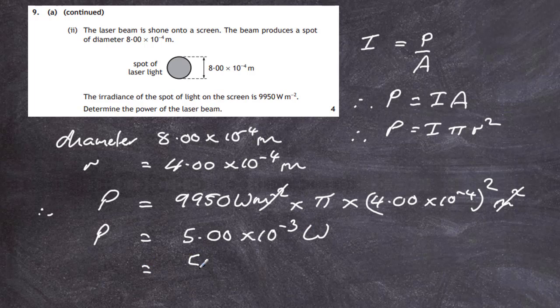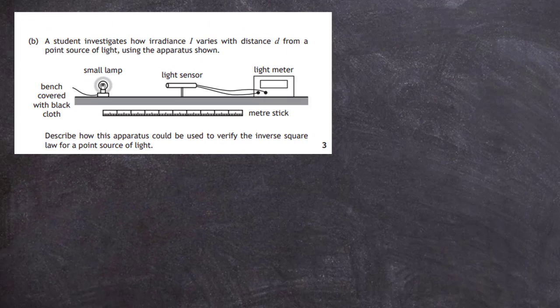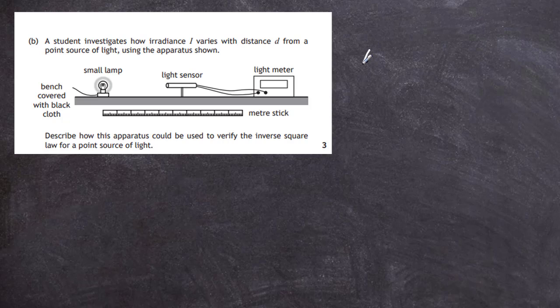Question 9B. A student investigates how irradiance I varies with distance d from a point source of light using the apparatus shown. We have a small lamp, a light sensor attached to a light meter, a bench covered with black cloth, and a meter stick. For three marks, we're asked to describe how this apparatus could be used to verify the inverse square law for a point source of light.